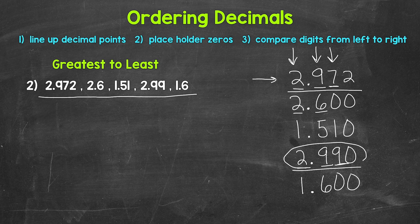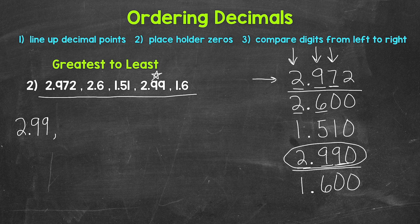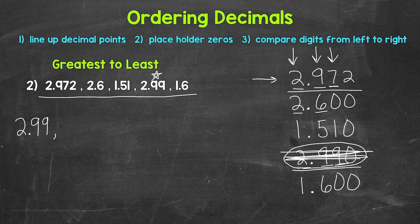So this is going to be our greatest — let's write two and ninety-nine hundredths. I wrote the decimal from the original list, two and ninety-nine hundredths, not the equivalent decimal with a placeholder zero, two and nine hundred ninety thousandths. Those are equivalent, so either will work, but I'm going from the original list. Now we can cross this off. Another way to think about this: we had nine hundred seventy-two thousandths compared to nine hundred ninety thousandths. Nine hundred ninety thousandths is greater than nine hundred seventy-two thousandths, so that was our greatest.